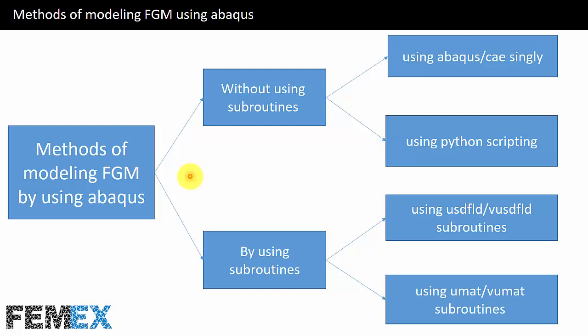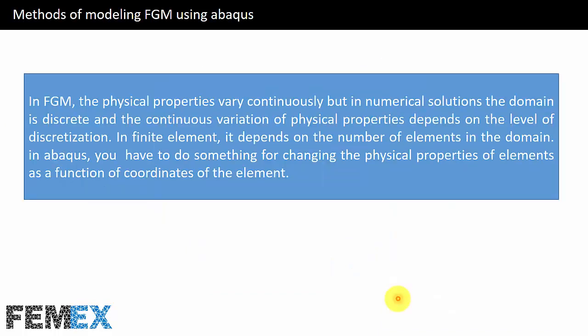You can model FGM without using subroutines or by using subroutines. If you don't want to use subroutines, you can use Abaqus CAE singly or use Python scripting. If you want to use subroutines, you can use USDFLD or VUSDFLD subroutines, or UMAT or VUMAT subroutines. In FGM the physical properties vary continuously, but in numerical solution the domain is discrete and the continuous variation of physical properties depends on the level of discretization.